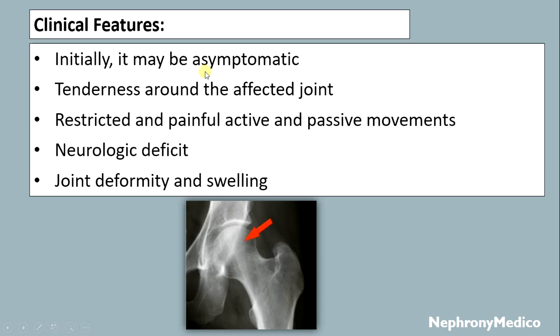The clinical features of avascular necrosis: initially it may be asymptomatic. There is tenderness around the affected joint, restricted and painful active and passive movements, neurologic deficit, and joint deformity and swelling may be seen.